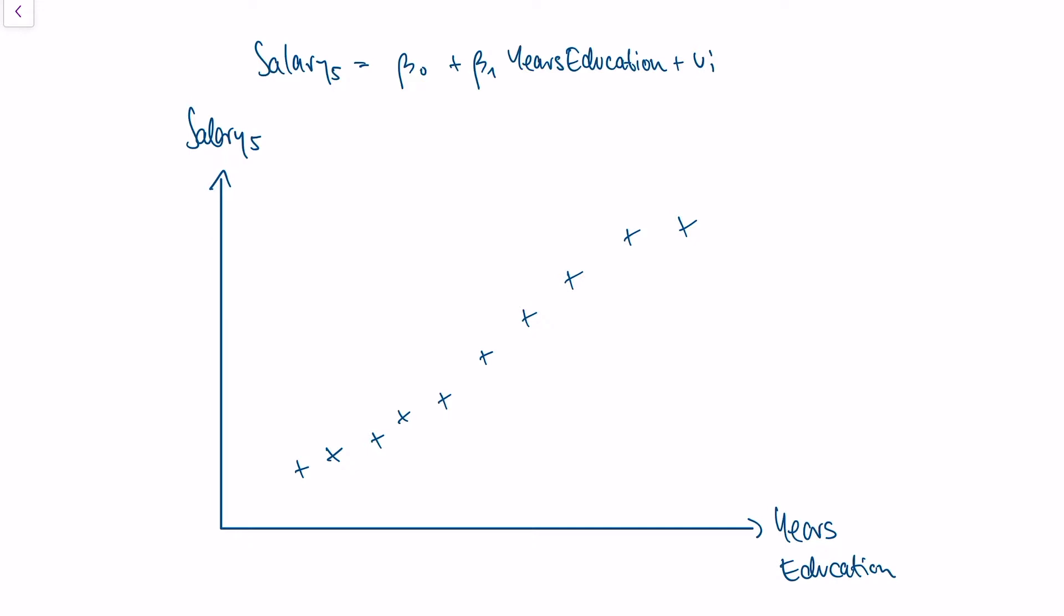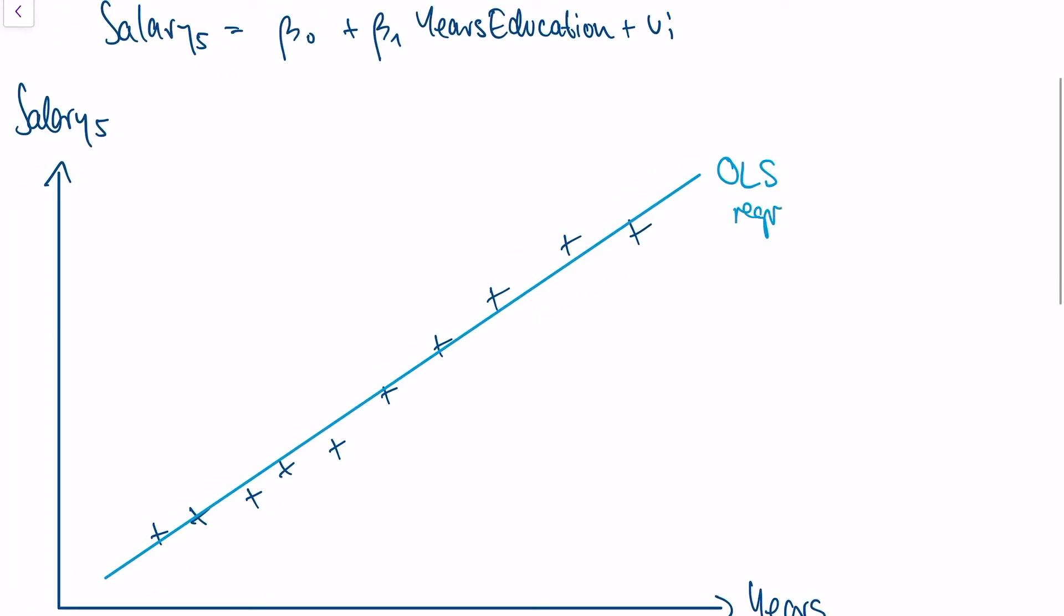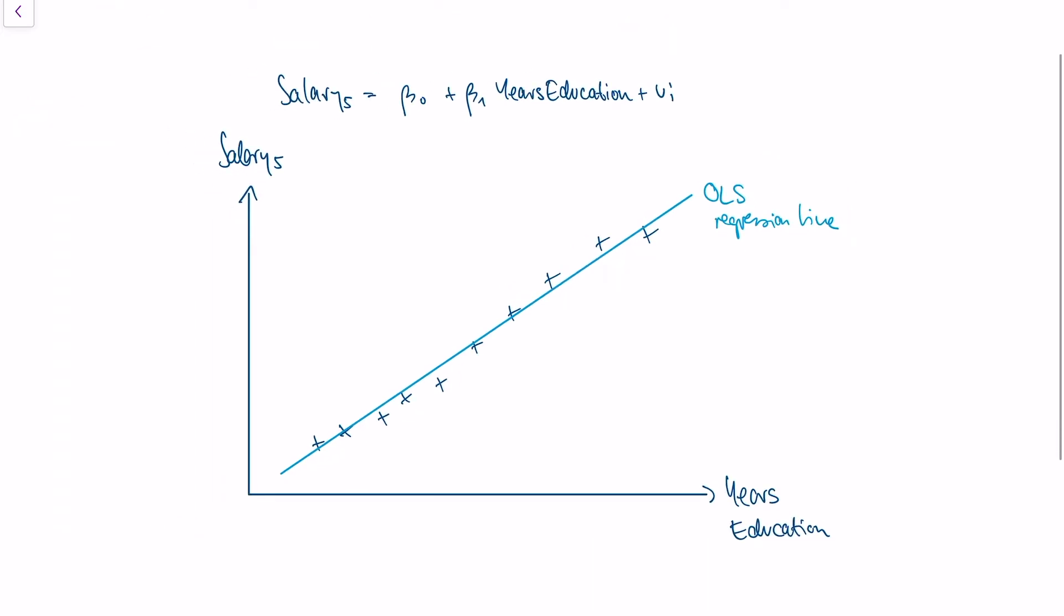What we could do naively is we could do an ordinary least squares regression. And what this regression would do is it would find the line that fits the data perfectly. So this would be our ordinary least squares regression line, and the slope of this line would be our estimate for beta 1.